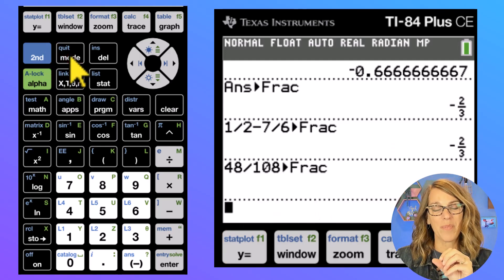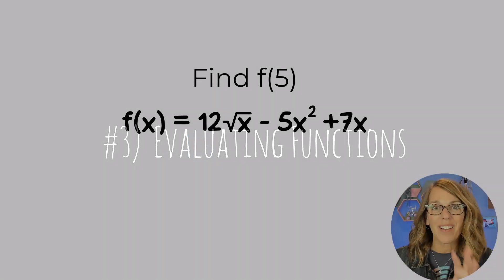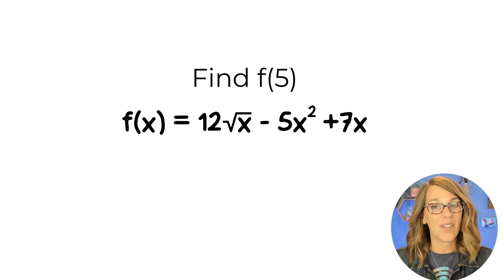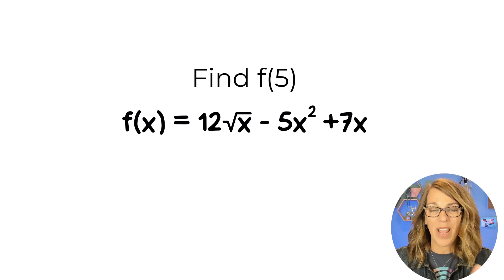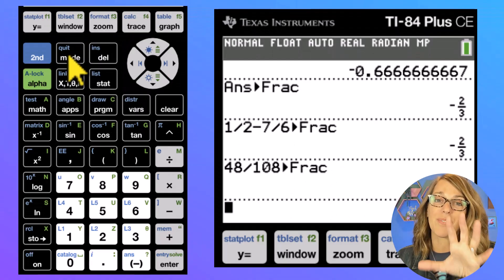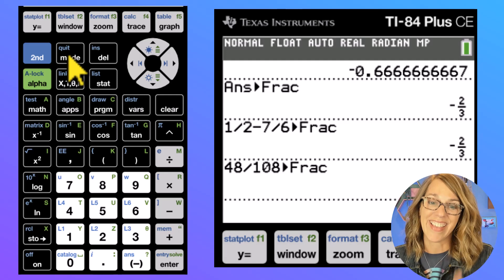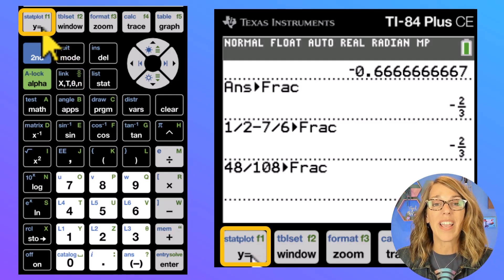And we're back to the home screen for tip number three. Let's say that you've got this pretty ugly function and you need to figure out the value at five. Well, you could type it all in, right? Replacing x with a five. Or you can use this really cool feature on the calculator. I'm going to pretend like I'm going to graph it. So go to Y equals.